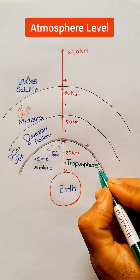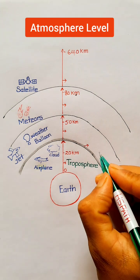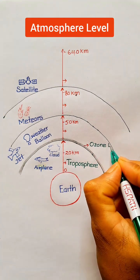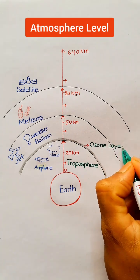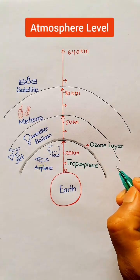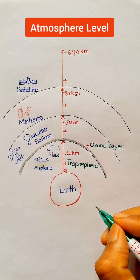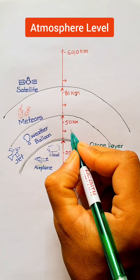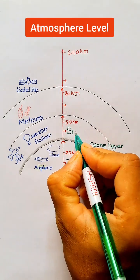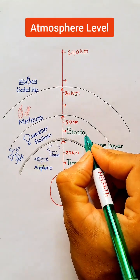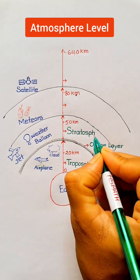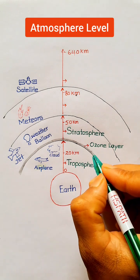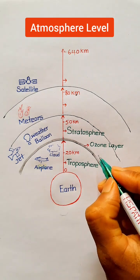Next, the ozone layer is located between the troposphere and stratosphere. The 20 to 50 kilometer region is called the stratosphere, where jet streams and weather balloons fly.